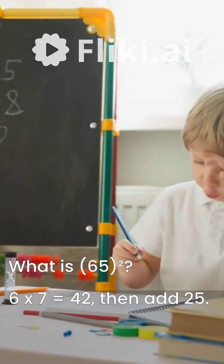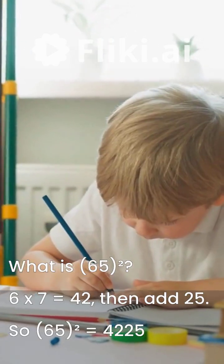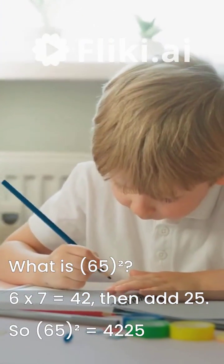Try it yourself. What is the square of 65? Use the same steps. 6 times 7 equals 42, then add 25. The answer is 4225.